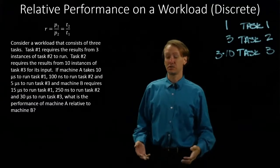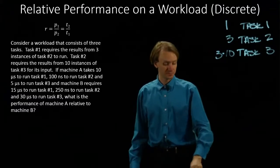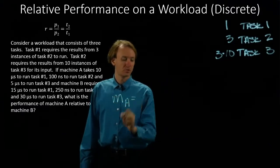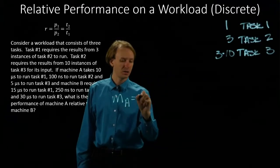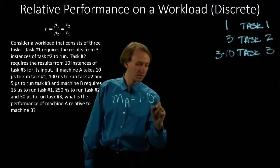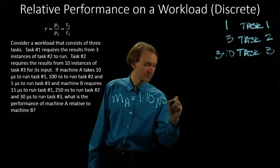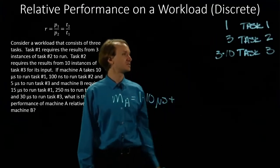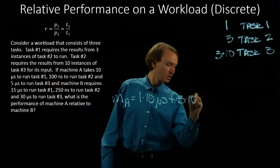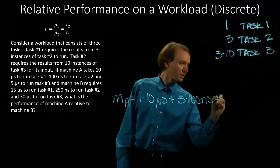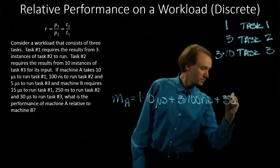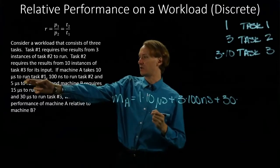Now, we're going to look at how long it takes each of these machines to run this set of tasks. Machine A needs to run one instance of task one, and that's going to take ten microseconds. Then it needs to run three instances of task number two, and each of those is going to take one hundred nanoseconds. And then we're going to run thirty instances of task three, each of which are taking five microseconds.